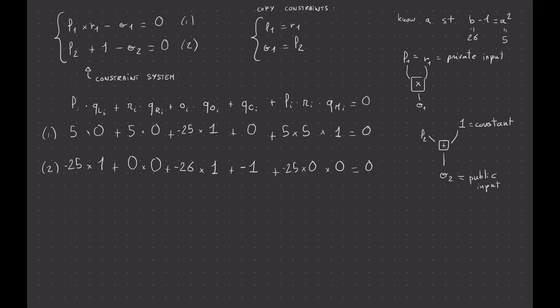What are we going to do with it? I'm going to see that as a table and take all of the columns and say that they are vectors. So L here is going to be a vector, QL is going to be a vector. I'm not going to call them like 'i' anymore — they're going to be vectors.